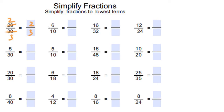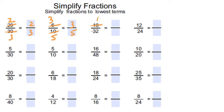You can use the 2 times table to simplify this one, because 6 and 10 are both multiples of 2. 2 times 3 is 6, and 2 times 5 is 10, so 3 over 5 is the simplified form of 6 over 10.